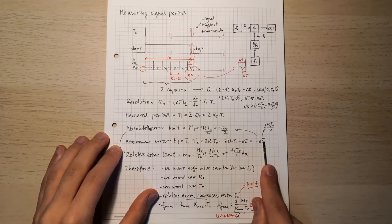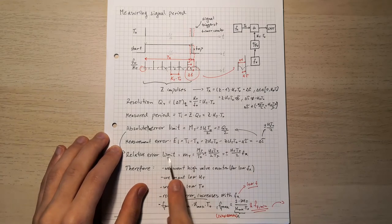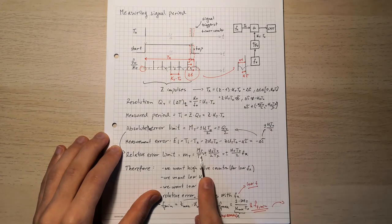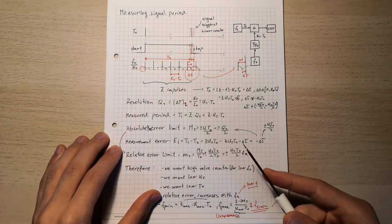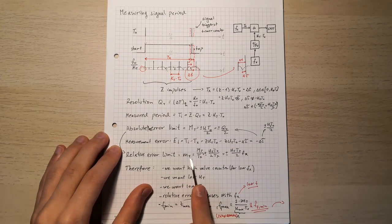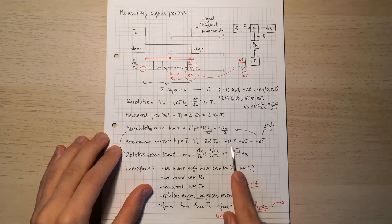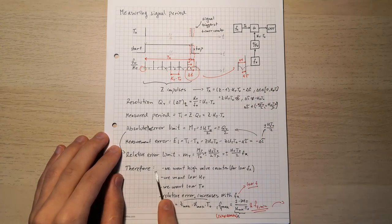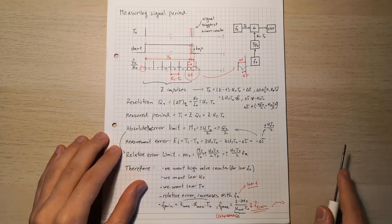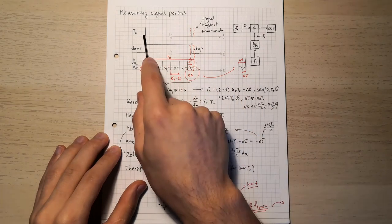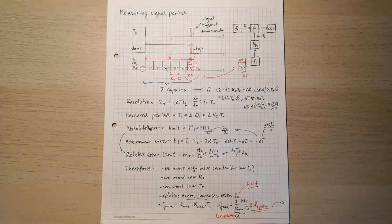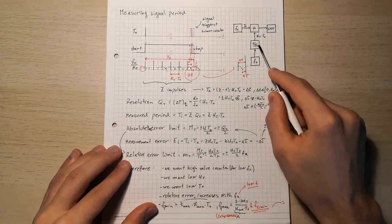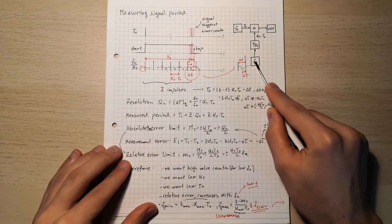Our relative error limit MT is the absolute maximum error limit defined by delta tau. The maximum value of delta tau is KT T0 times 0.5, which means our relative error limit is KT T0 times 0.5 divided by the measured signal. Converting TX into FX, we can see that our relative error limit MT changes with frequency linearly. It also changes linearly with our divider for the internal clock and with the period of the internal clock.